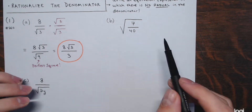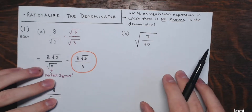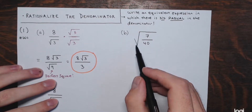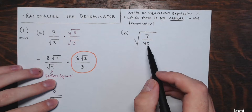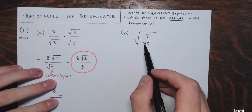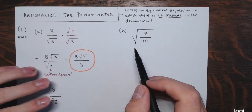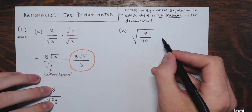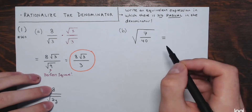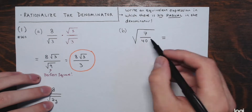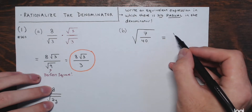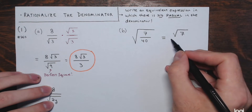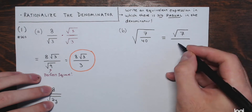Part b: we have the square root of 7/40. There's a denominator inside a radical — we don't want that. So I'm going to use the quotient property: the square root of a fraction equals the square root of the numerator divided by the square root of the denominator. I personally like to simplify my radicals first and then rationalize.